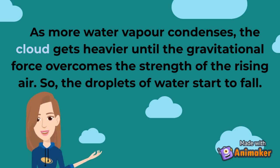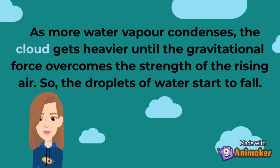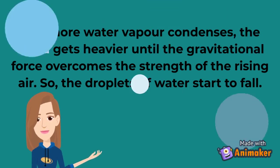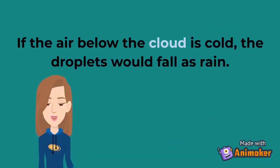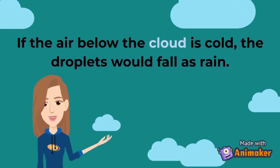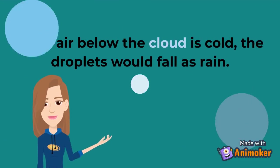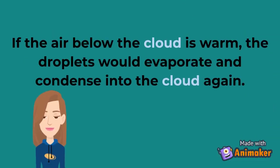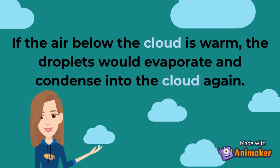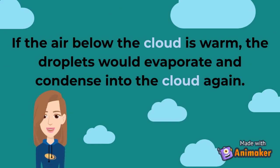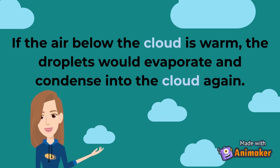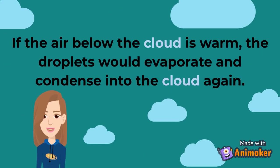So the droplets of water start to fall. If the air below the cloud is cold, the droplets would fall as rain. If the air below the cloud is warm, the droplets would evaporate and condense into the cloud again.